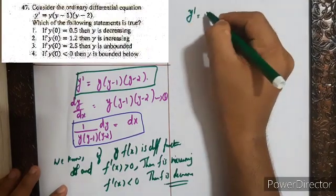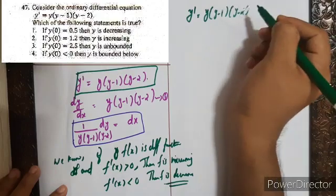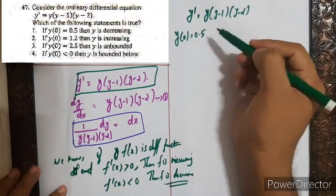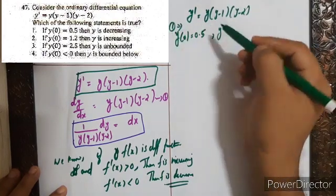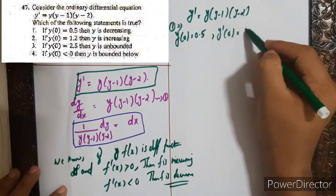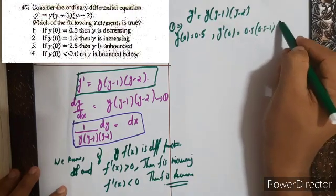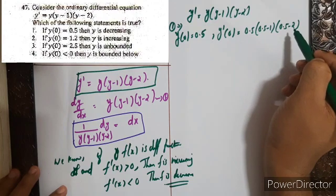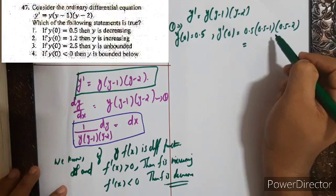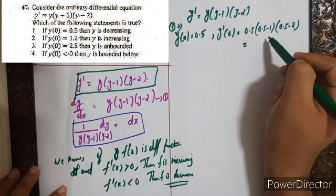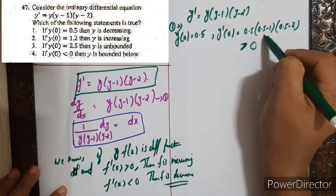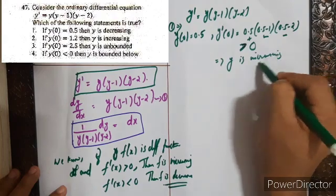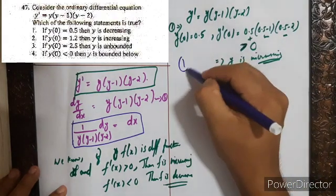For the first option, y(0) = 0.5. Then y'(0) = 0.5 × (0.5 - 1) × (0.5 - 2) = 0.5 × (-0.5) × (-1.5). This gives a positive value — negative times negative is positive — which implies y is increasing. But option 1 says y is decreasing, so the first option is false.